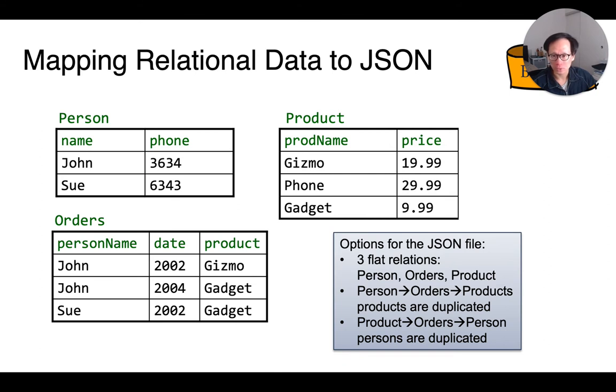Or we can store product information at the top level. Then each product stores the orders that were placed for that particular product. And furthermore, within each order stores the customer's information. Here, person objects are duplicated instead. So in general, there isn't really a very good way to store these many-to-many key relationships if we want to keep everything in the same JSON document.